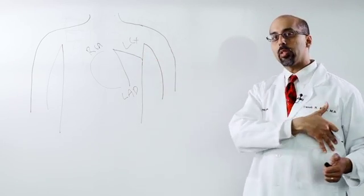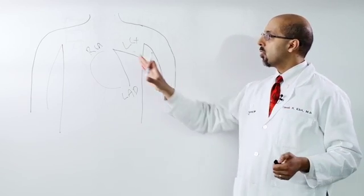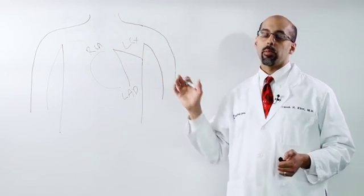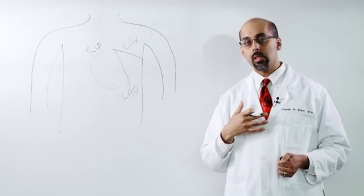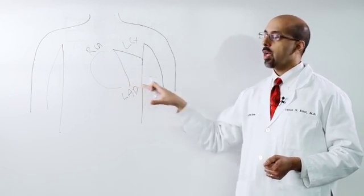The left circumflex works on the side of the heart to get blood supply there. And the right coronary artery, in most patients, provides blood supply to the right ventricle, which sends blood to the lungs, and also supplies blood supply to the back side of the heart.